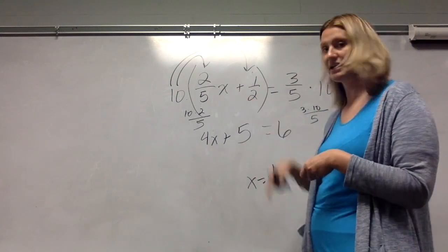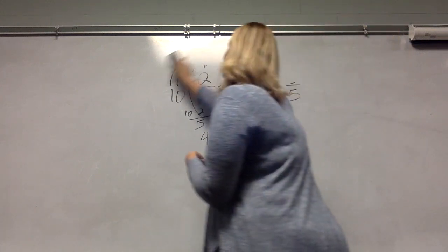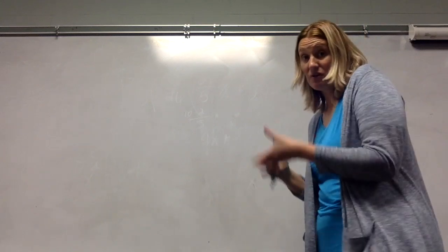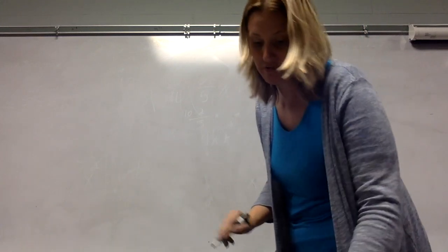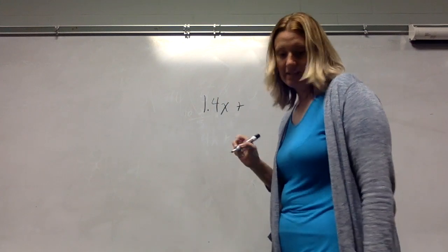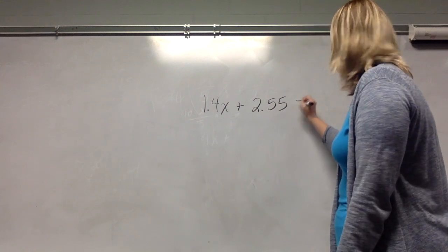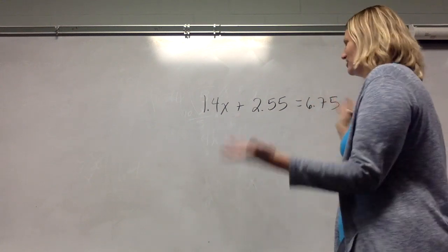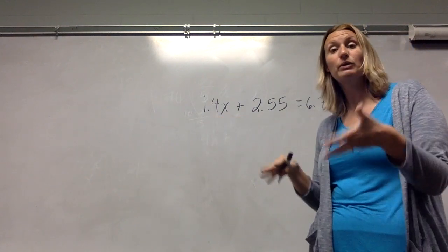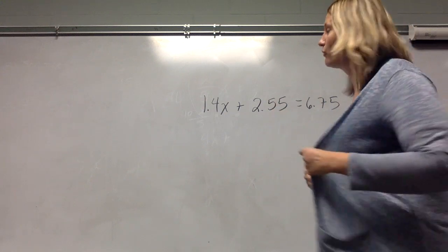Again, plug back into the original to solve. So, the last thing you may see is not necessarily fractions, but decimals. Remember, decimals can be rewritten as fractions. So, 1.4x plus 2.55 equals 6.75. Again, you could go through the process of just subtracting 2.55 and then dividing by 1.4 and being done. But if you really prefer not to work with the decimals, we can also multiply through.